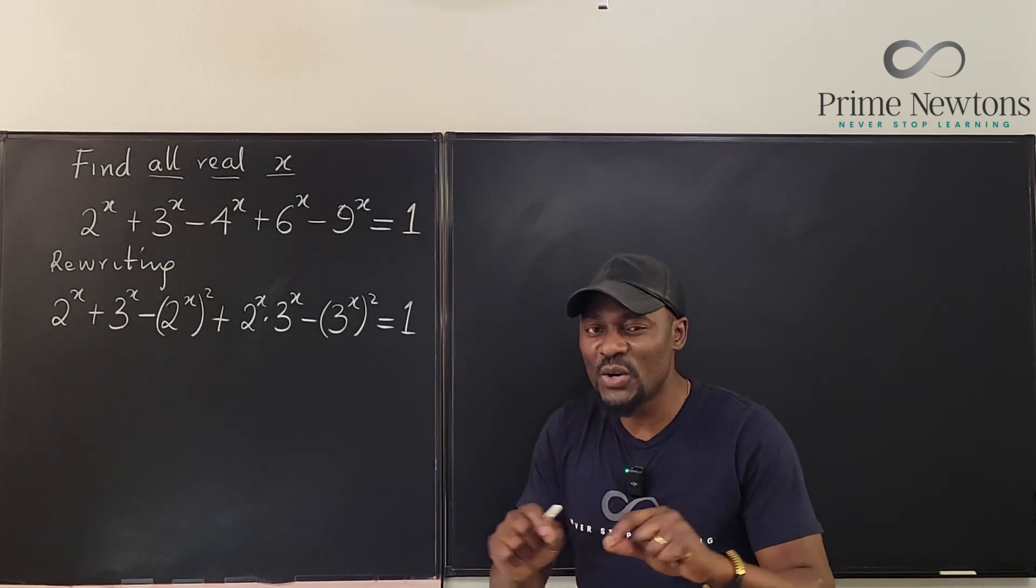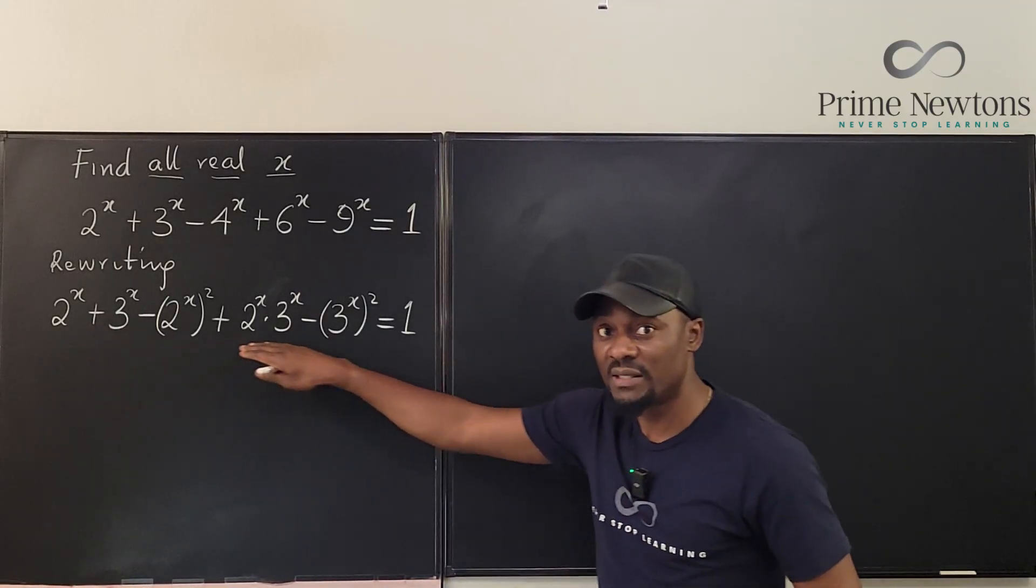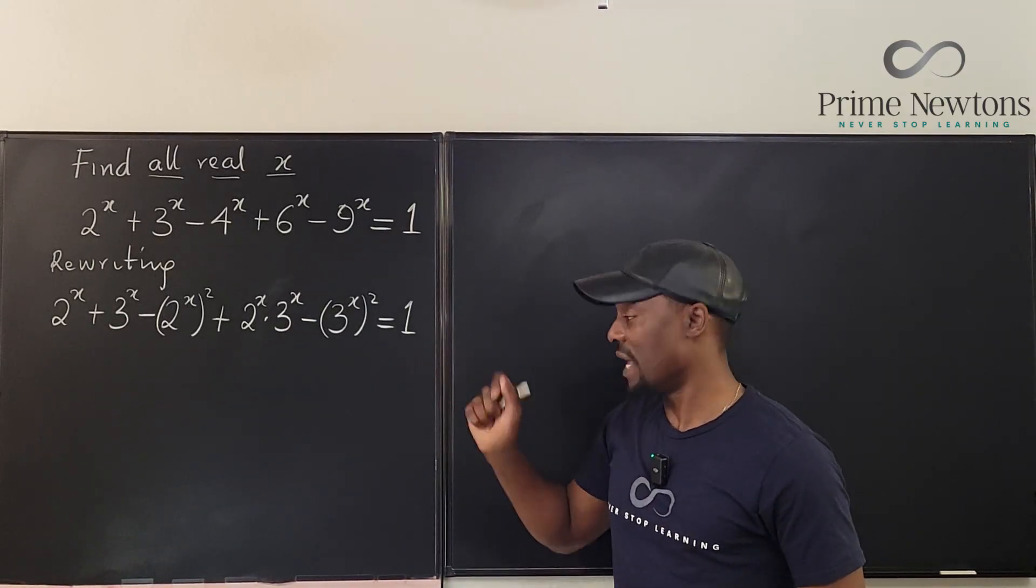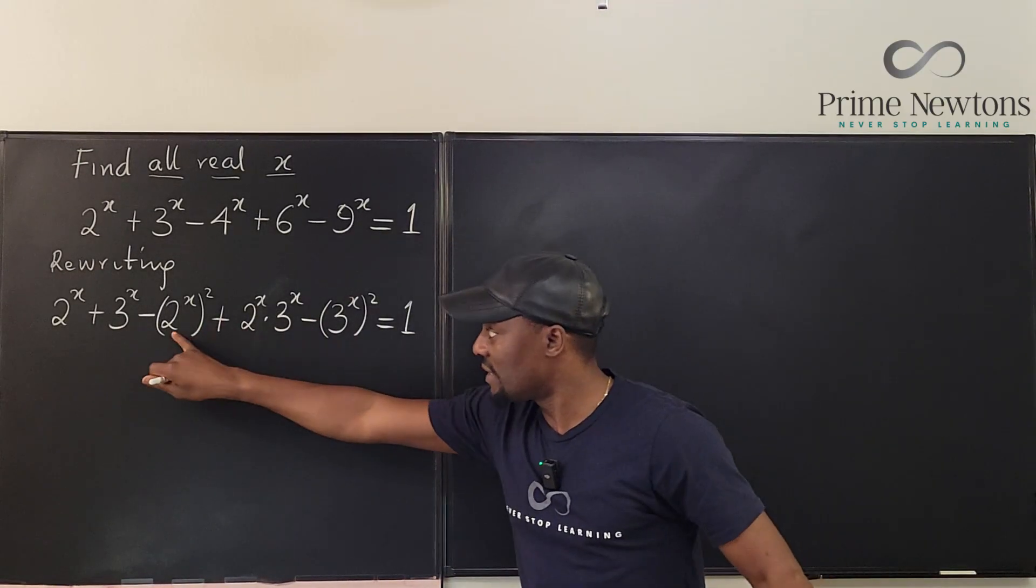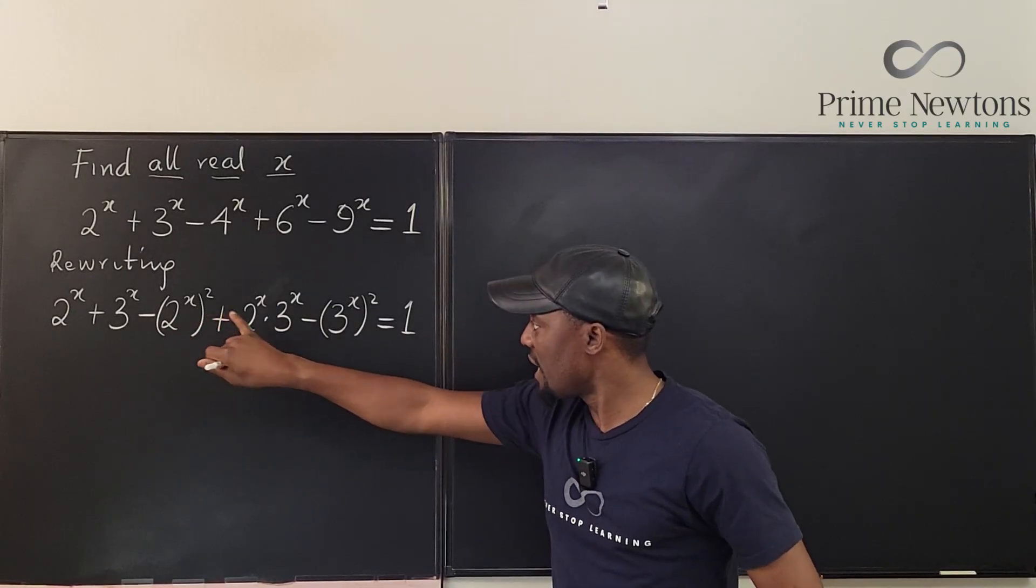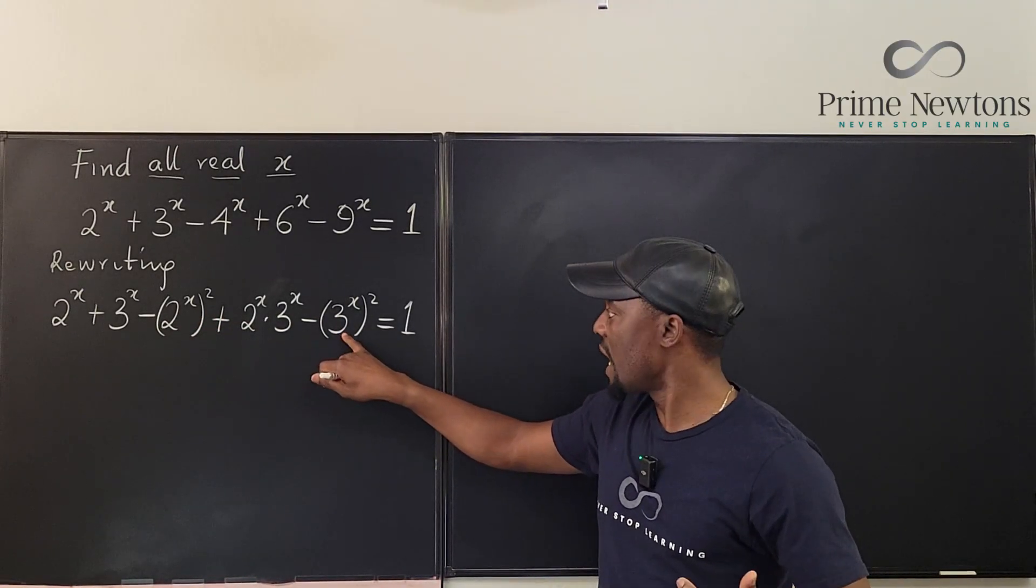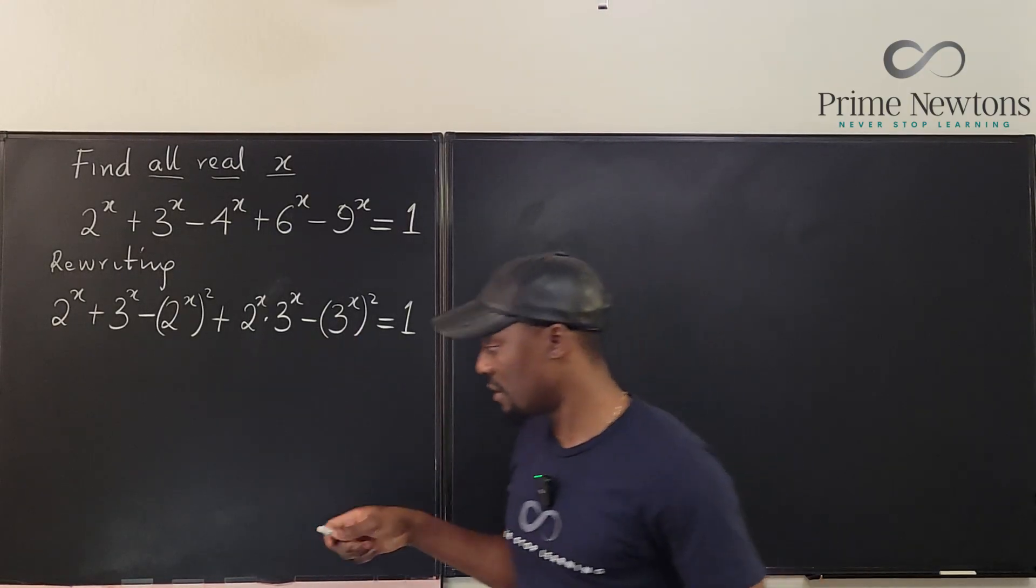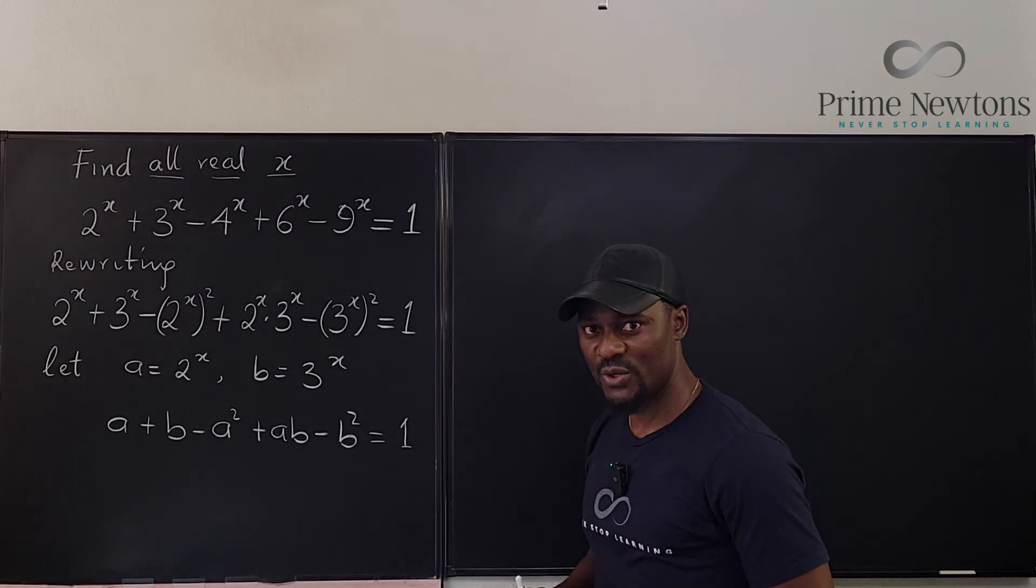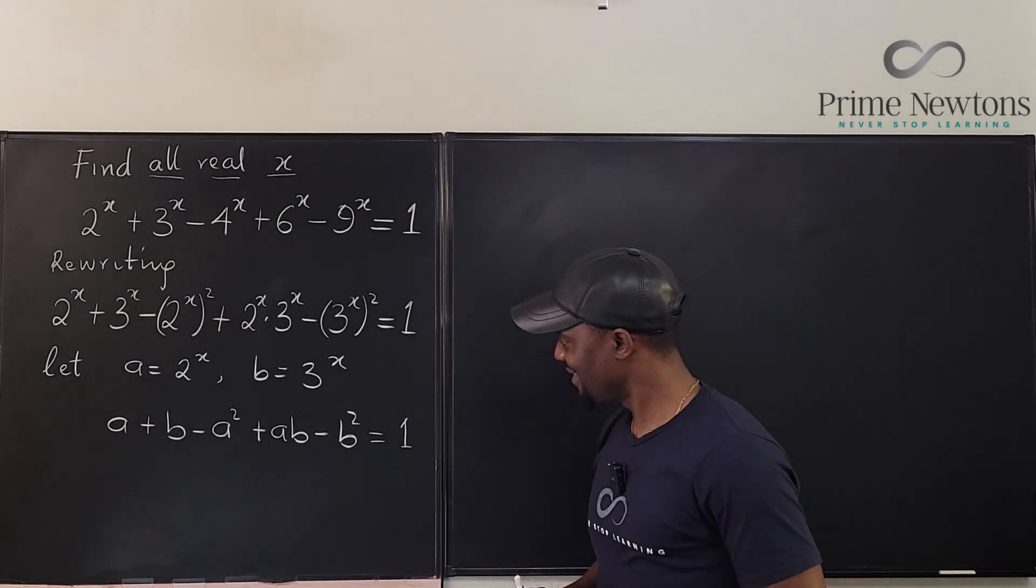Just to make things look clean, let's use letters. Let a = 2^x and let b = 3^x, so all the 2^x will be a and 3^x will be b.